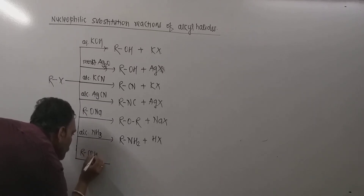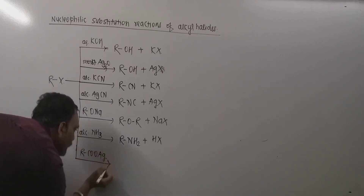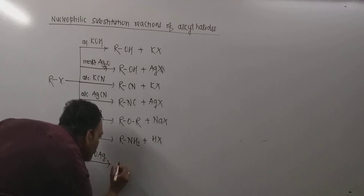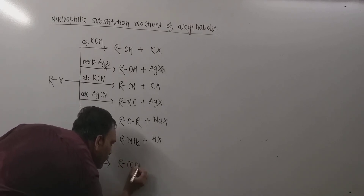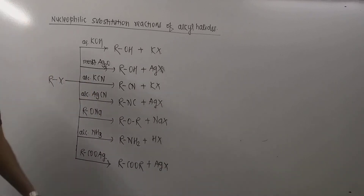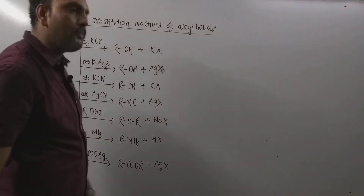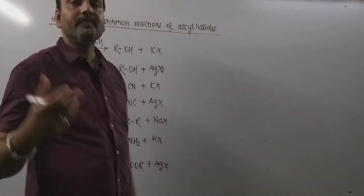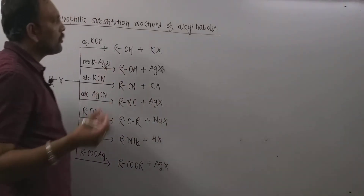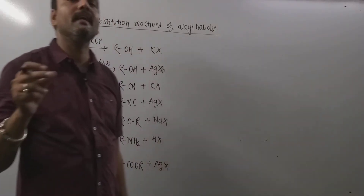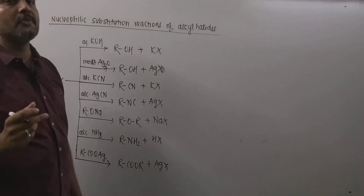Reaction with alcoholic silver salt of carboxylic acid: alkyl halides react with silver salts of carboxylic acids to form esters, along with silver halide. Note that esters have a fruity smell. These are a few examples of nucleophilic substitution reactions shown by alkyl halides. Thank you very much.